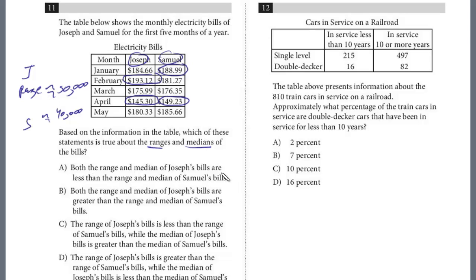Looking at the answer choices: both the range and the median of Joseph's bills are less than Samuel's — no, that's not true. We know Joseph has a higher range. So we're down to B and D, because both of those have Joseph with a greater range.